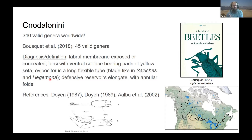The characteristics for this tribe: the labral membrane can be exposed or not; the tarsi usually have ventral surfaces with pads of yellow setae; the ovipositor is super long in most genera. However, in two genera that stick out from the main group, the ovipositor is blade-like and heavily sclerotized — quite unique — and it's also found in a couple of genera in the Indomalayan realm. A larger phylogeny might determine which other genera are closely related and whether they form a monophyletic unit outside the rest of the group.